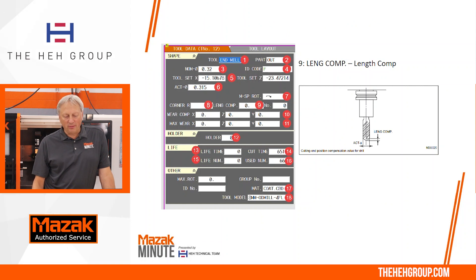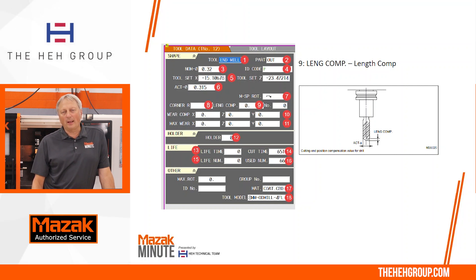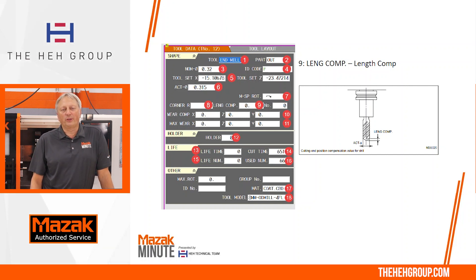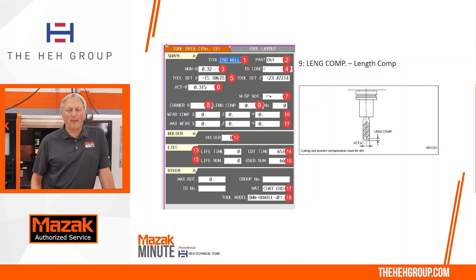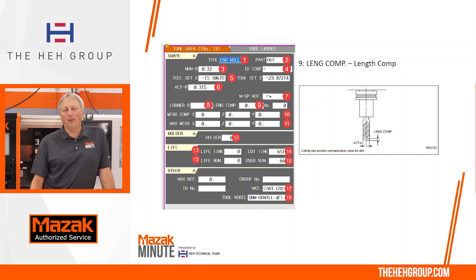Number nine is the length compensation. That's going to be the length if you want to comp the tool to cut a little bit more stock. Think of it as a drill tip comp — it's a positive value. If you're going to take more stock off, it's going to be a larger positive value.